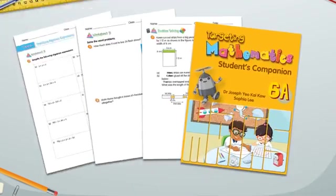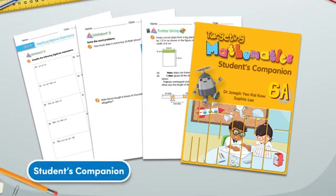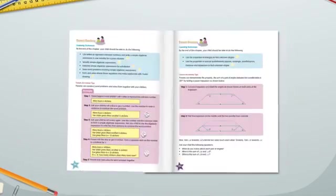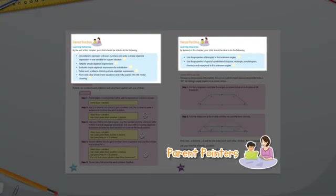The student's companion offers additional practices with differentiated worksheets - Level 1, Level 2 and Level 3 - that are developed in conjunction with the textbook chapters. With parent pointers, parents can take a more active approach in their child's development of mathematical concepts.